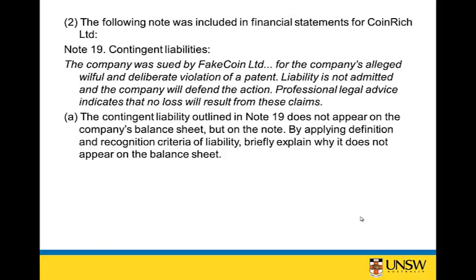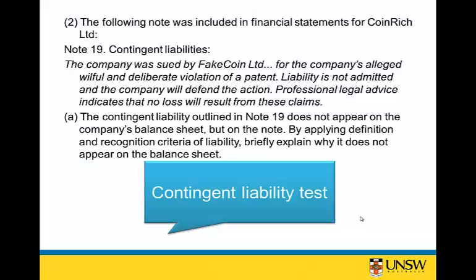Part two of this question: note 19 — contingent liabilities. The company was sued by Fake Coin Limited for the company's alleged willful and deliberate violation of a patent. Liability is not admitted and the company will defend the action. Professional legal advice indicates that no loss will result from these claims. We need to explain why this appears in a note rather than in the company's balance sheet, by applying the definition and recognition criteria of a liability.